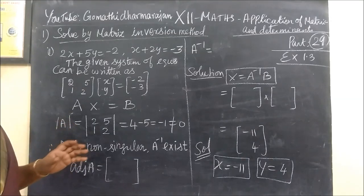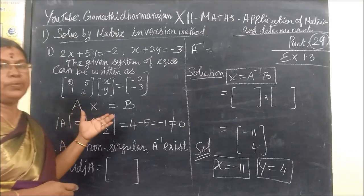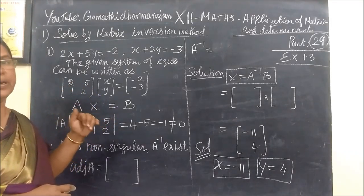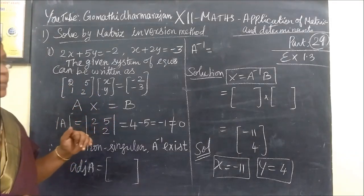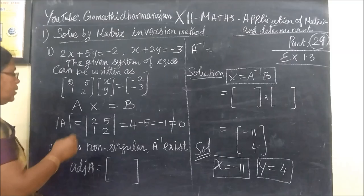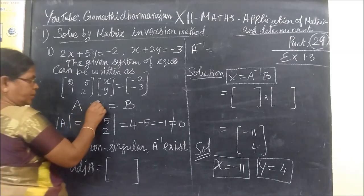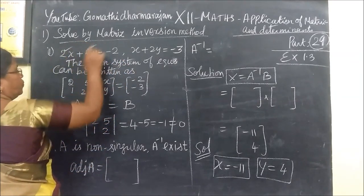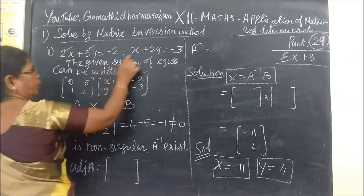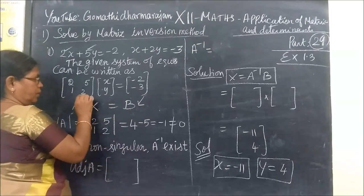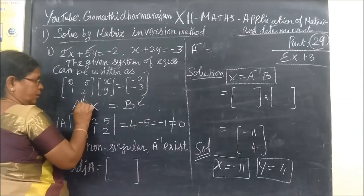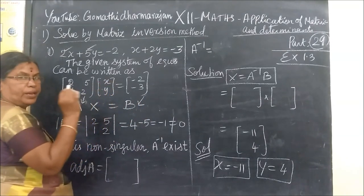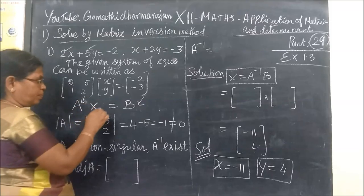Matrix inversion method is used for a system of equations. That method uses coefficients correctly. You write it in the form A equal to B. The coefficients — 2, 5 — form row 1 and row 2. That is the equation of the coefficients: X coefficient, then Y coefficient.